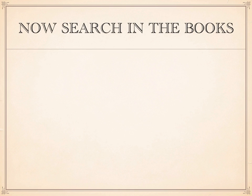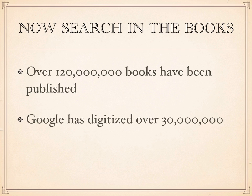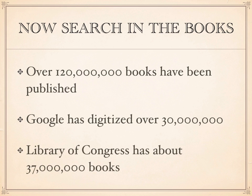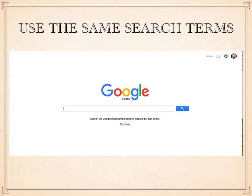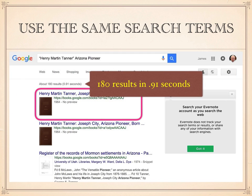I next suggest searching in Google Books. The Google Books section focuses searches on a huge collection of books that have been digitized by Google. Google estimates that over 120 million books have been published, and Google has digitized over 30 million of those books — for comparison, the Library of Congress has about 37 million books. By entering 'Henry Martin Tanner, Arizona Pioneer,' I get results from books containing those search terms — in this case, 180 results in .91 seconds.